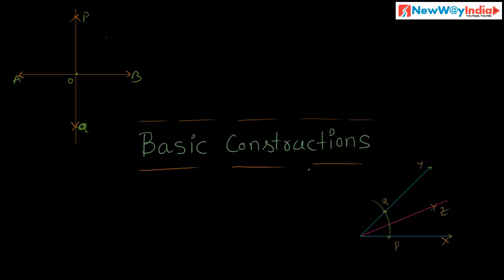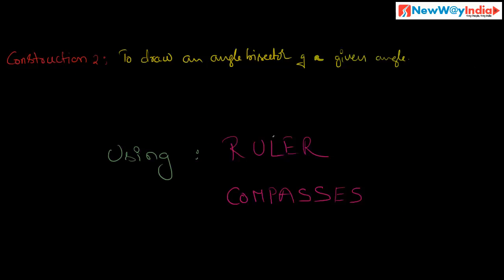Let us discuss basic constructions using ruler and compasses. In the previous concept we discussed how to construct the perpendicular bisector of a given line segment. Now in this presentation, Construction 2 is to draw an angle bisector of a given angle using ruler and compasses. So how will you construct the angle bisector of a given angle?